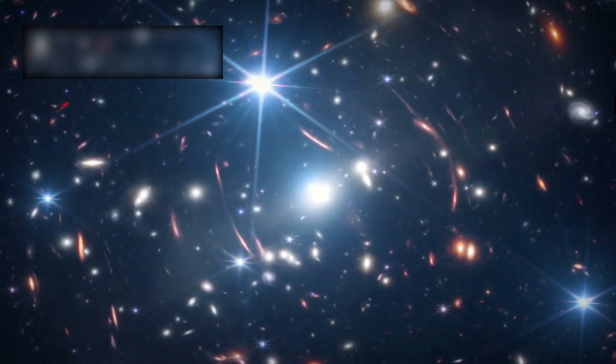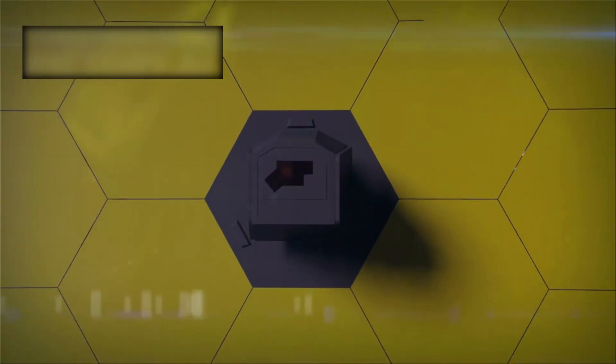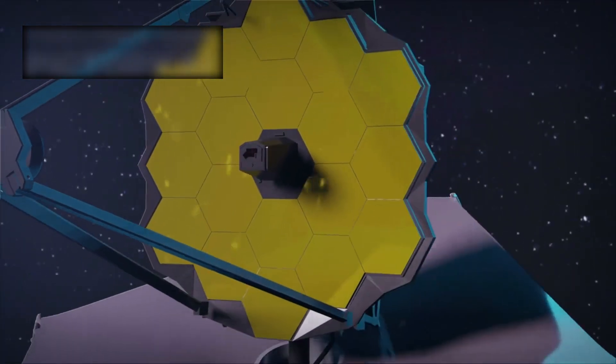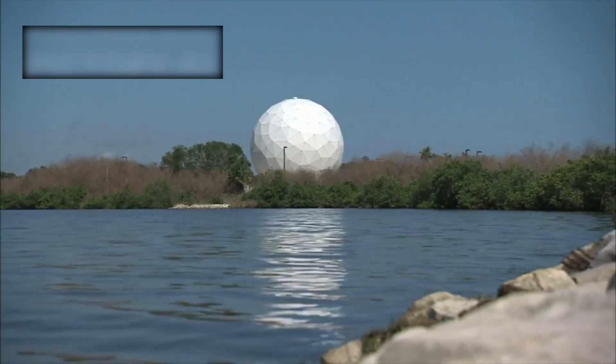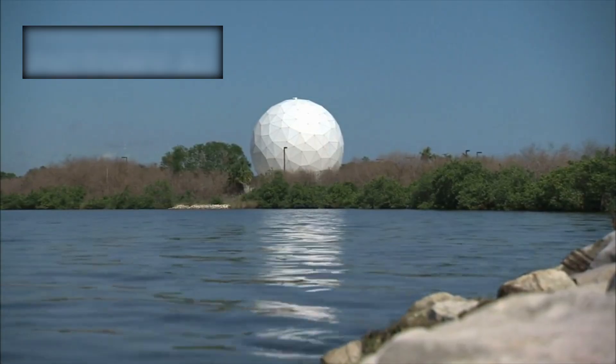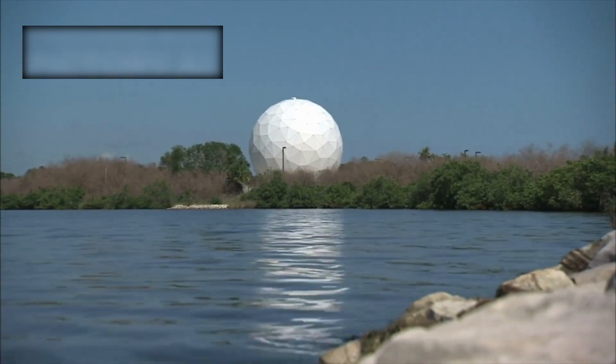The James Webb Space Telescope, launched in December 2021, is the most powerful astronomical observatory humanity has ever built. With its enormous gold-coated mirror and advanced infrared instruments, it was designed to peer farther into space, and therefore farther back in time, than any telescope before it.